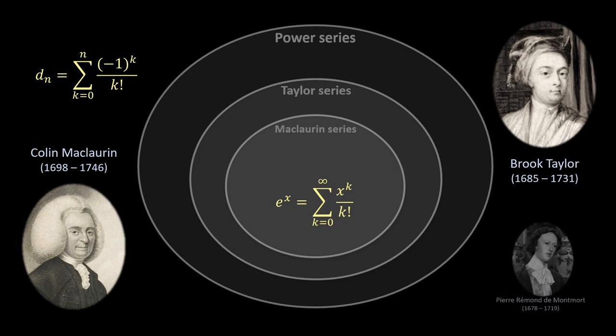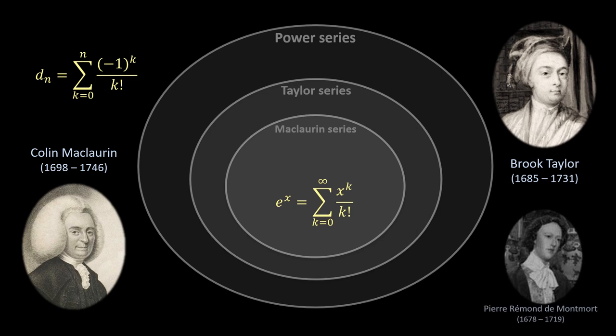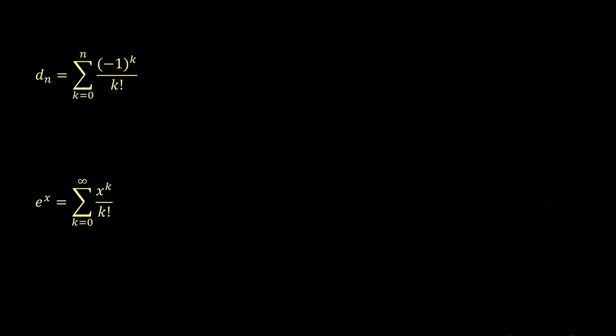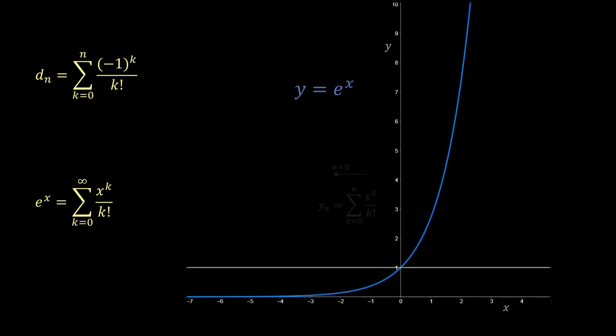In fact, the introduction of these series came after de Montmort's work on derangements, so he was unable to fully exploit the connection to this body of theory. But to show that this series does make sense, here's a quick plot of the partial sums up to n is 12.